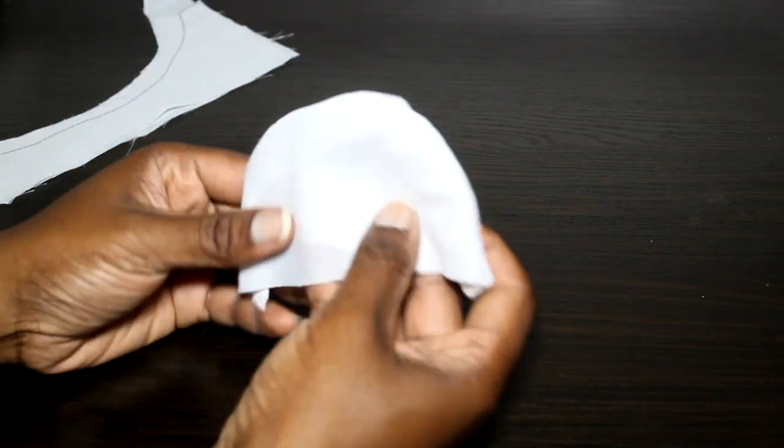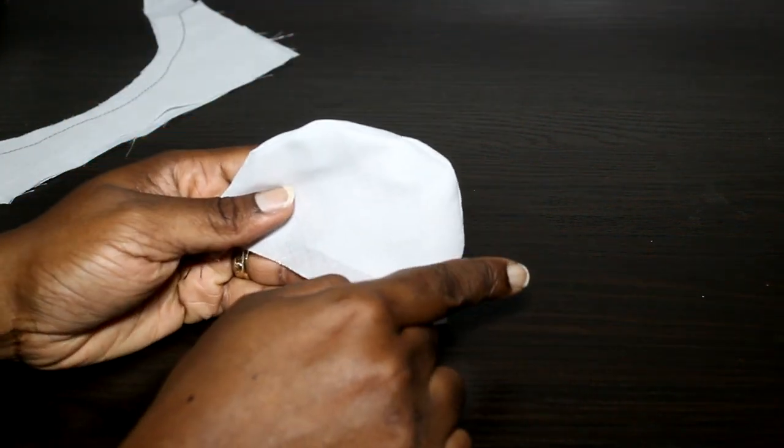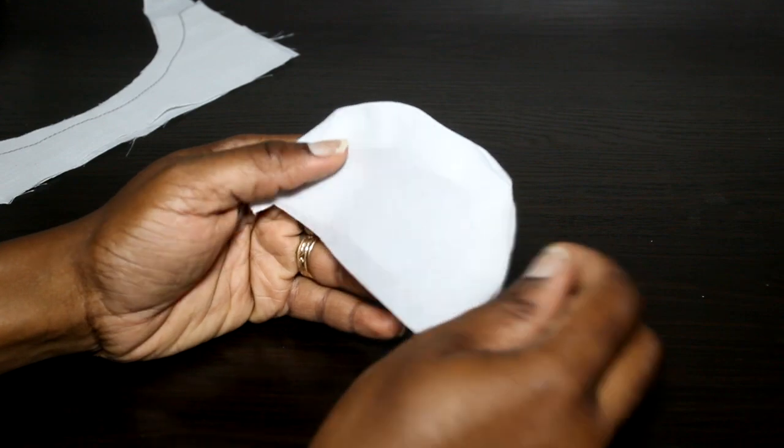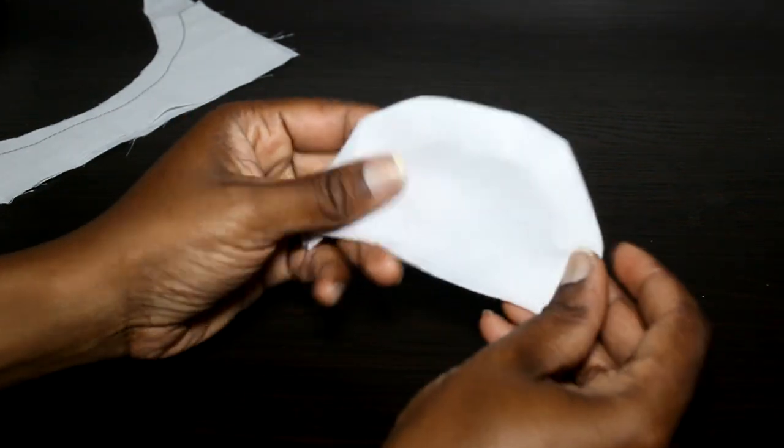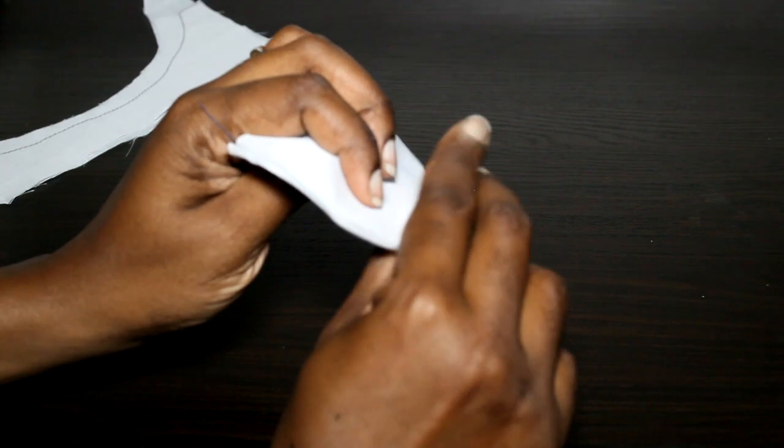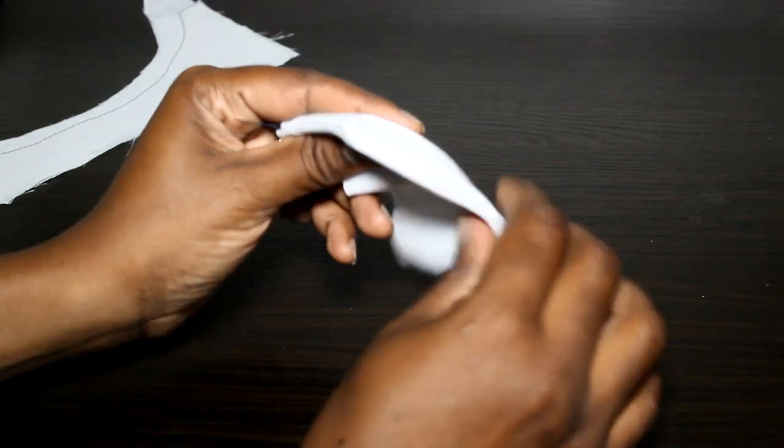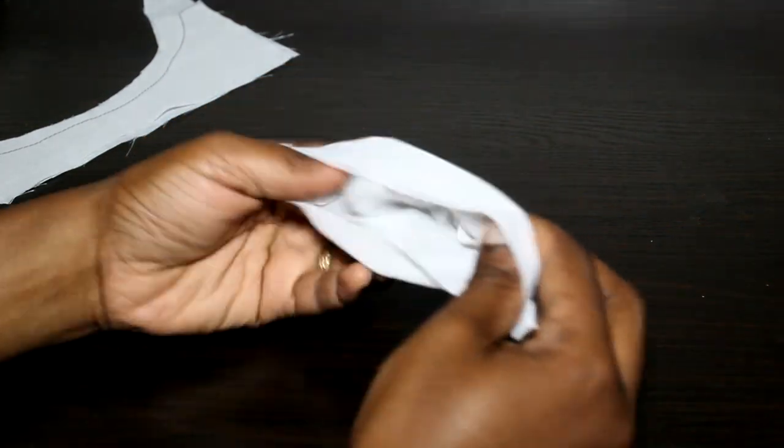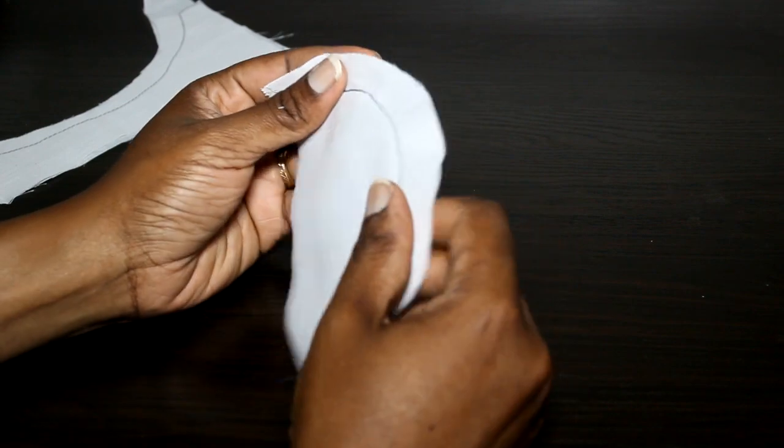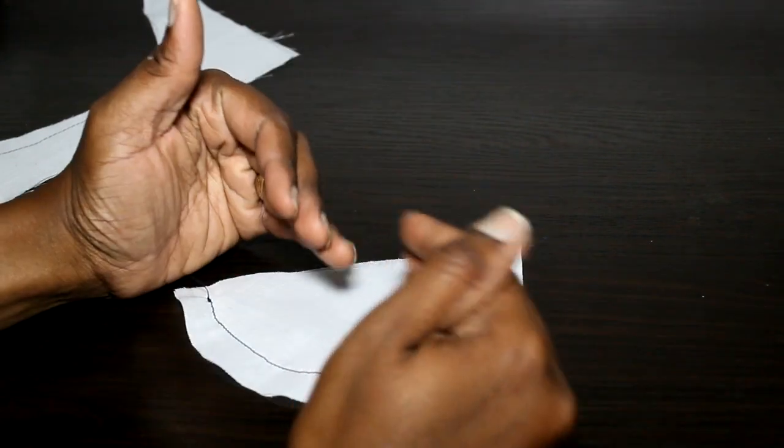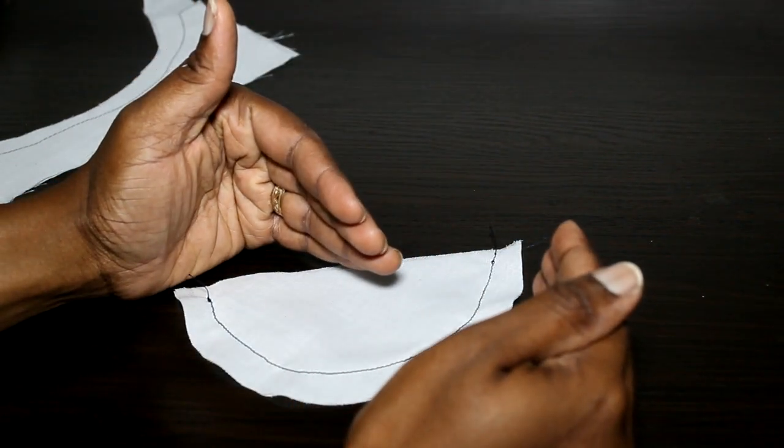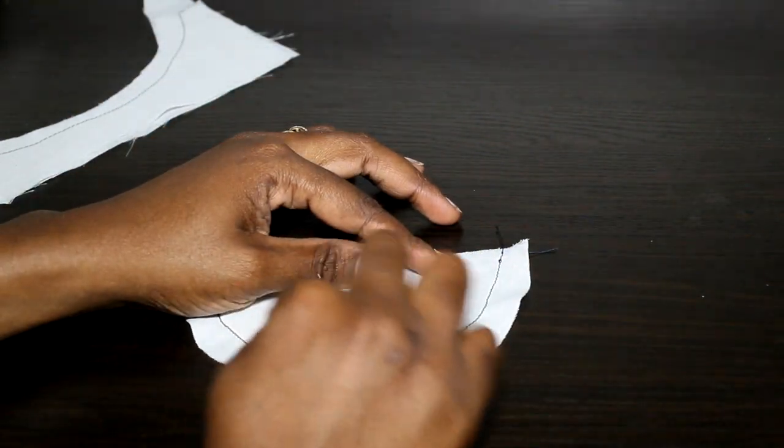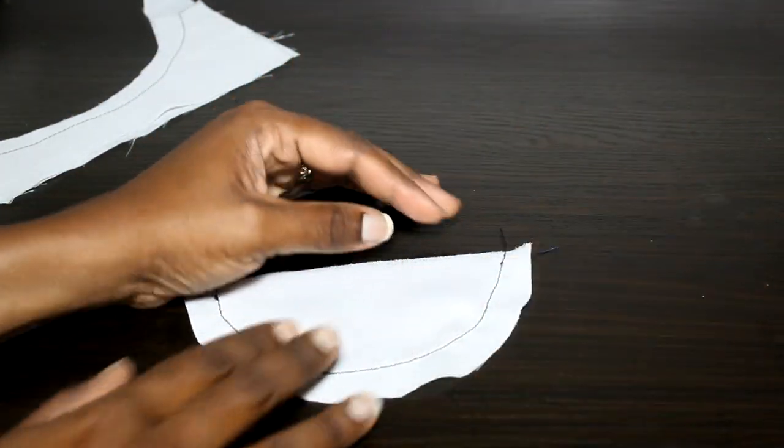Now if we want to get this edge to lie smooth, we also have to trim the fabric because you can see the fabric is bunching underneath, so it's really thick. So what we do with outer curves, you want to reduce the fabric so that when you fold it in, because this is a smaller space, everything lays flat.